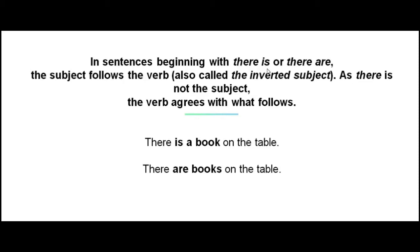In sentences beginning with 'there is' or 'there are,' the subject follows the verb — this is called the inverted subject. Since 'there' is not the subject, the verb agrees with what follows. For example: 'There is a book on the table' — the verb 'is' agrees with the singular subject 'book.' 'There are books on the table' — 'are' agrees with the plural subject 'books.'